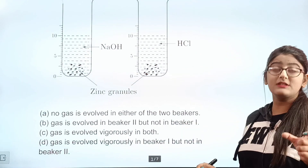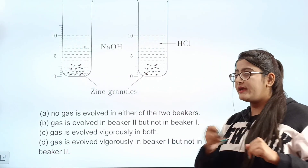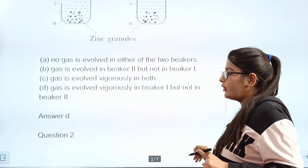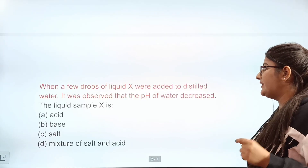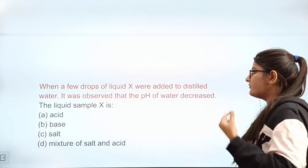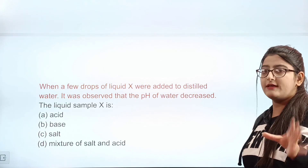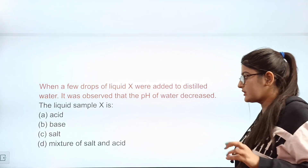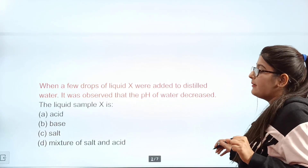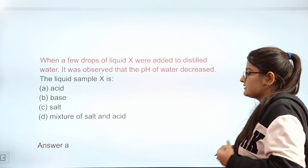Question 2: A few drops of liquid X were added to distilled water. It was observed that the pH of water decreased. What is liquid X? Option A: acid. Option B: base. Option C: salt. Option D: mixture of salt and acid. The correct answer is A — liquid X is an acid.